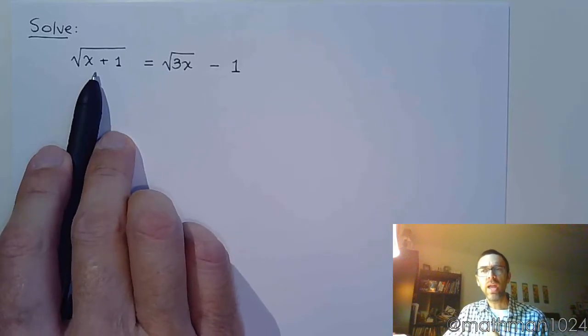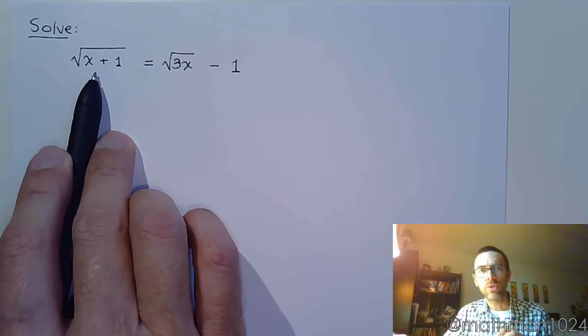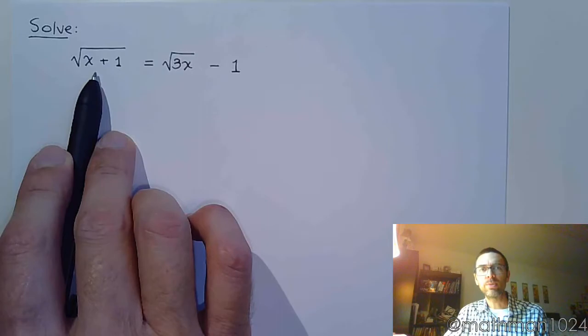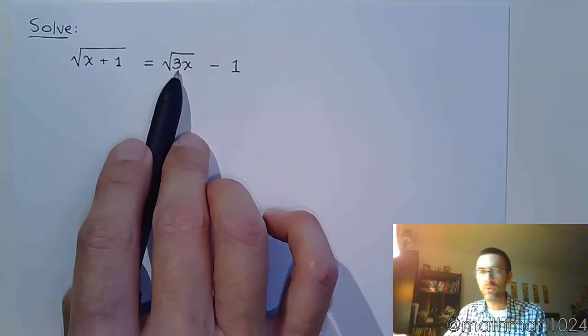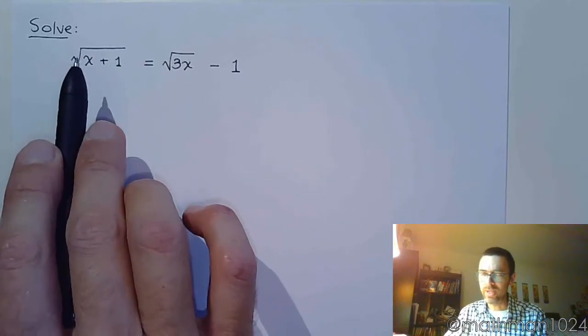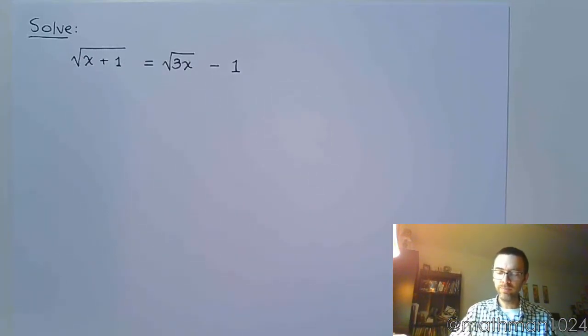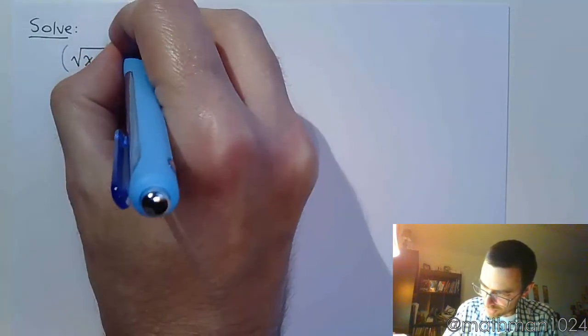If you have multiple radicals, the one that you want to isolate is going to be the one that has the more complicated looking radicand. This one has two pieces, two terms, this one only has the 3x. So I would say keep this one by itself and apply the power property. So I'm going to raise both sides to the second power.